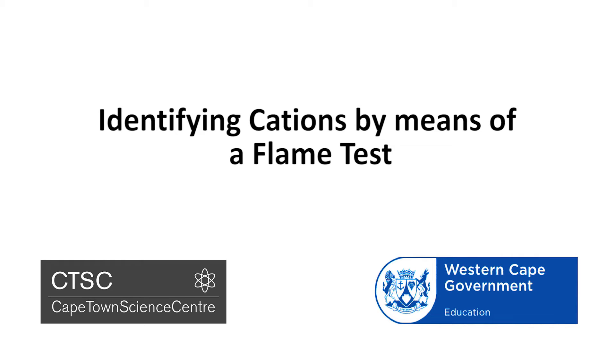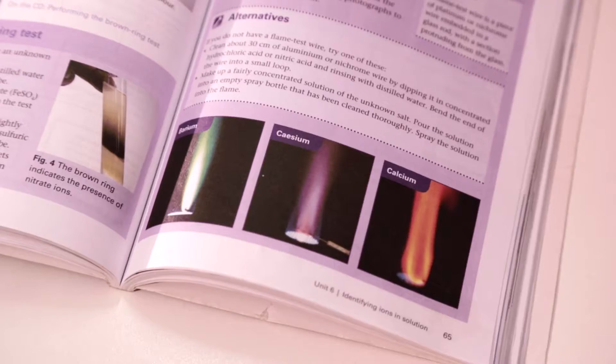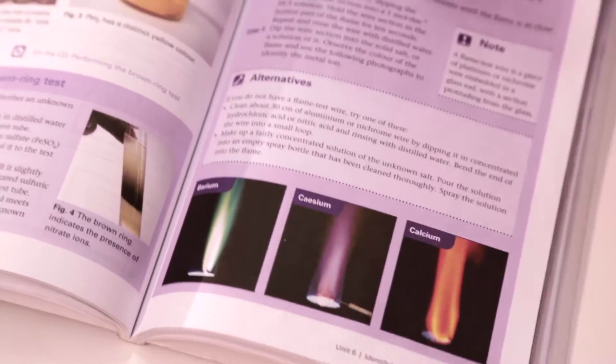In this practical, we will identify some metals using a flame test. Metal ions in salt display distinctive colors when a salt or a solution of it burns in a colorless flame.